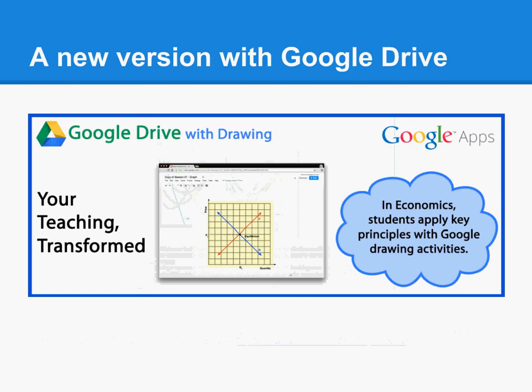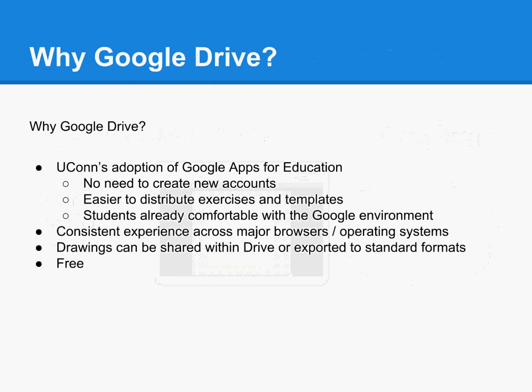For the new version of the activity we deployed in 2013, we used Google Drive's drawing tool to create and distribute the exercises, as well as to create student responses. Students then submitted and evaluated their work within HuskyCT, UConn's Blackboard-based learning management system. In summer 2011, UConn began a migration of student email accounts to Google Apps for Education, and the transition was completed by the end of 2012. Thus, all our students already have a Google account that corresponds to their UConn email address, which includes a Google Drive account with 30 gigabytes of free storage.